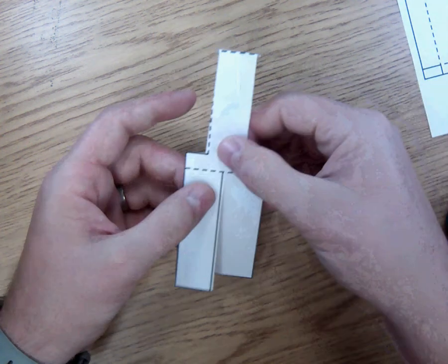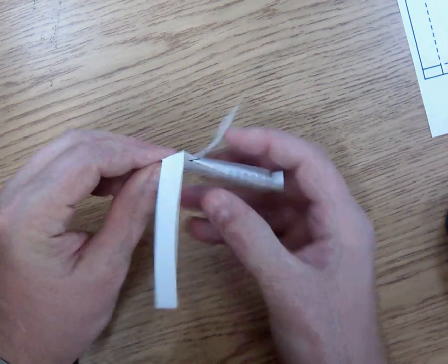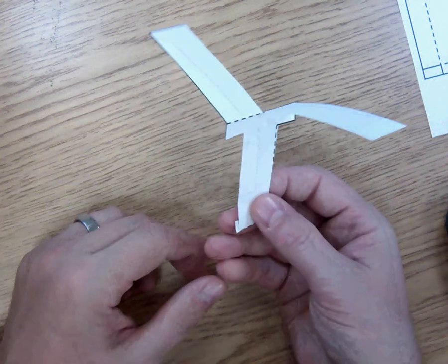And then fold one of those flaps forward and one of them backwards. And this is what you have. You have a paper helicopter.